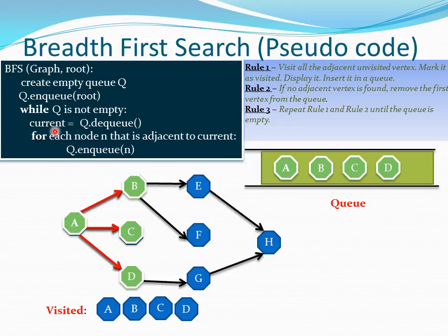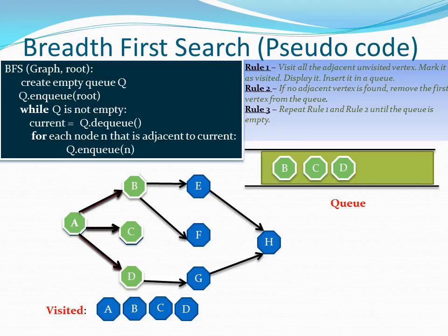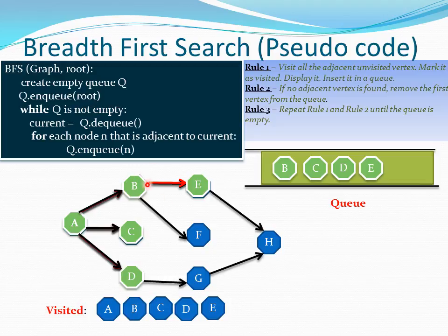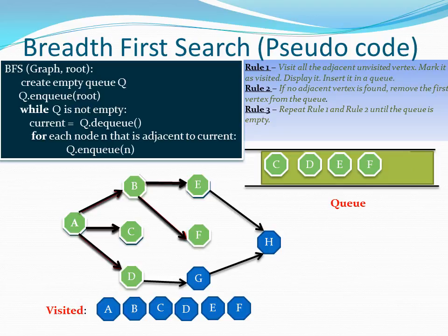When that iteration is over, the current node A is automatically removed — that is rule two being automatically applied. We have B, C, and D in our queue now. We dequeue B from the queue and set current to B. We iterate B's adjacent nodes in the for loop. B has one adjacent node which we visit, and then B is done, so B is automatically removed from the queue.